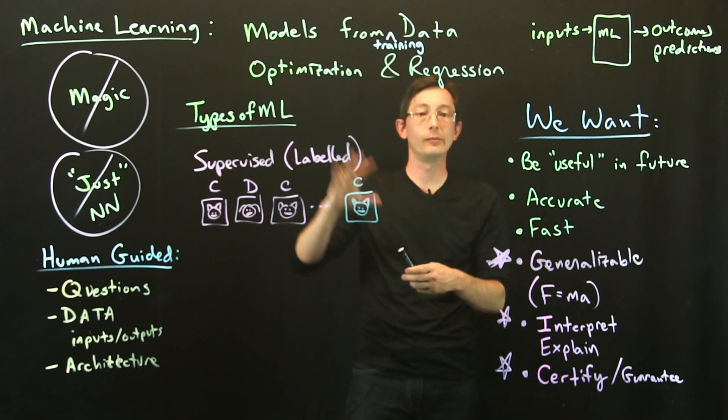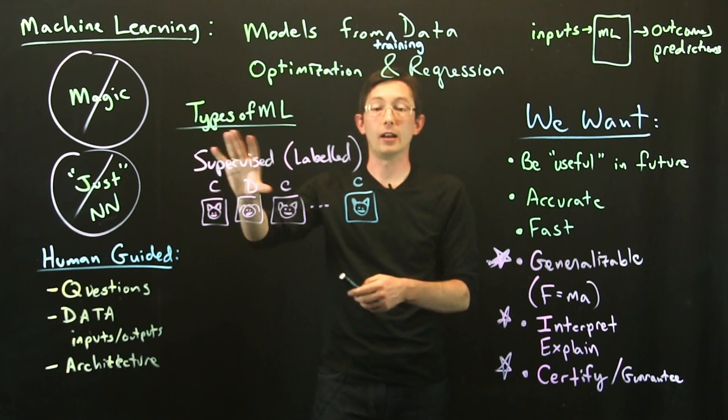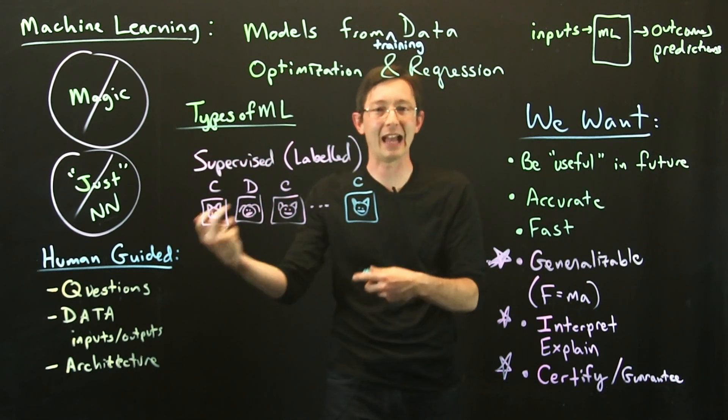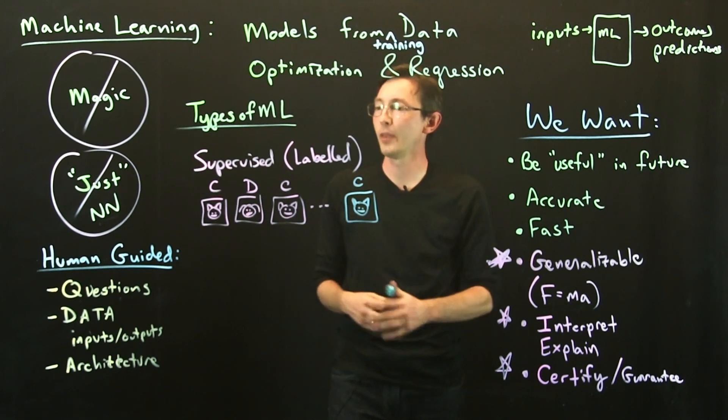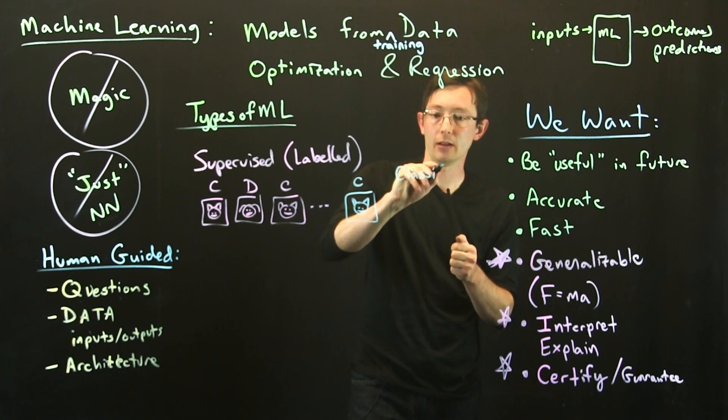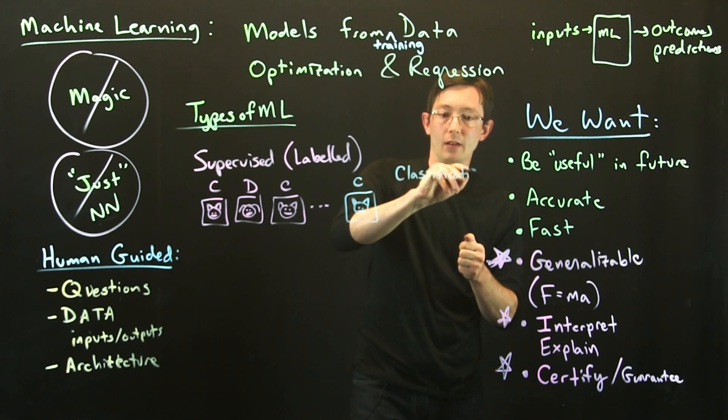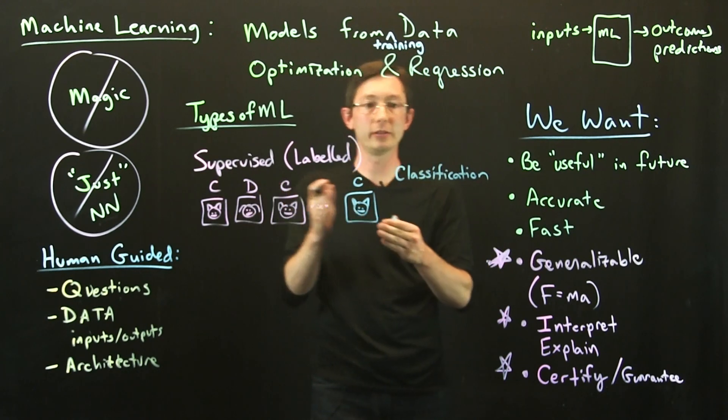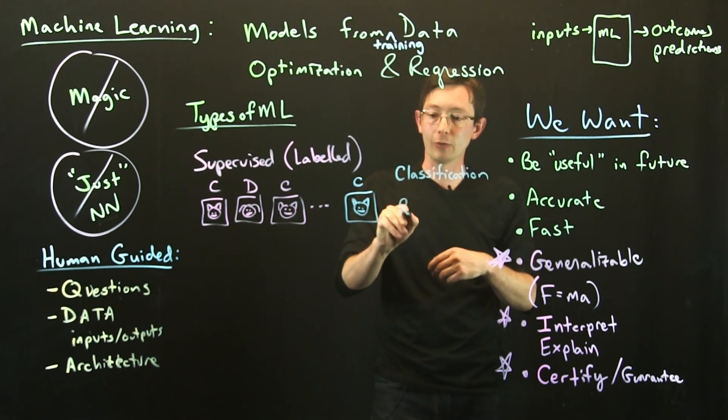So that's what we mean by supervised learning. If your data comes in categories like cats and dogs and birds and people, then this is called classification. If the data is discrete or categorical data, it's classification, or it's regression if the data is continuous.